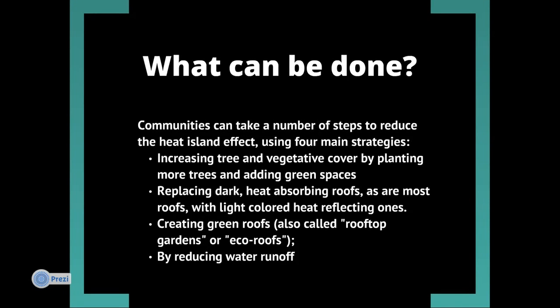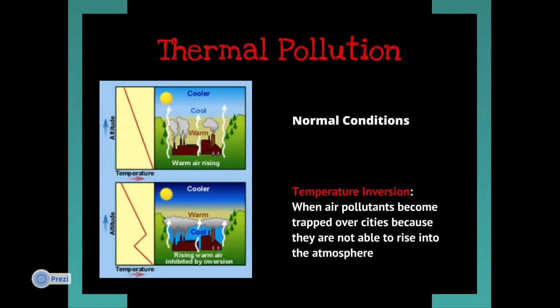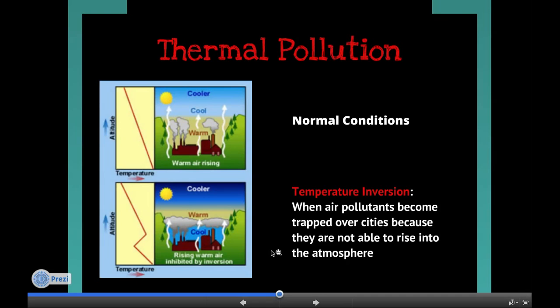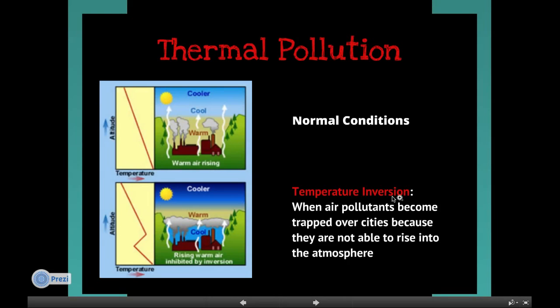There are strategies to mitigate heat islands, such as increasing parks, trees, and green spaces; replacing dark roofs with more reflective, light-colored roofs; and creating green roofs and rooftop gardens to reduce water runoff. Another aspect of thermal pollution is temperature inversion, which occurs when warm air becomes trapped within a valley and cannot escape, as shown in this picture.